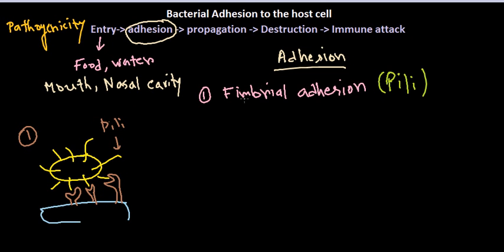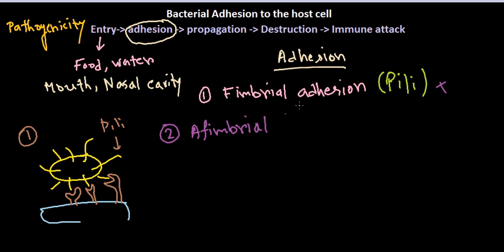The second type of attachment is via affimbrial adhesion, which is due to the attachment of different kinds of cell adhesion molecules. In affimbrial adhesion, we don't require pili. The bacterium may still have flagella and other structures, but not pili.